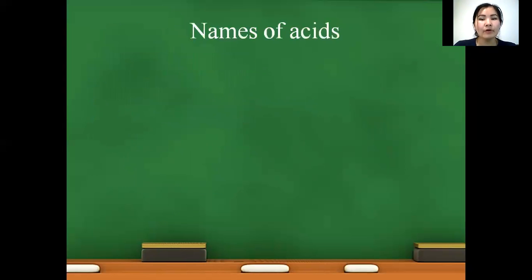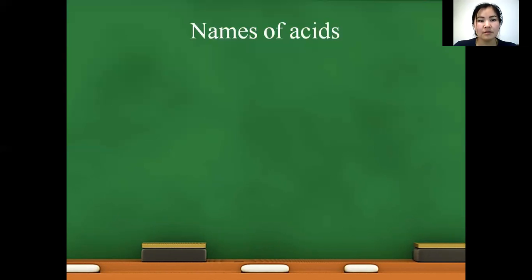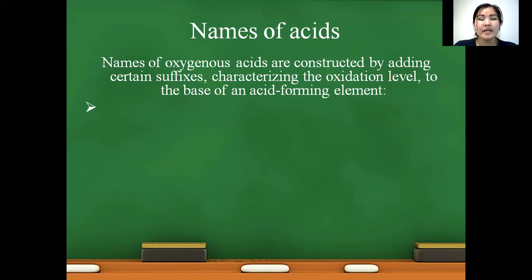Names of acids. Names of oxygenous acids are constructed by adding certain suffixes, and these suffixes characterize the oxidation level in acid. Look at the examples. The names of acids with a high oxidation level are constructed with the help of word acidum, Latin name of chemical element with suffix -icum.